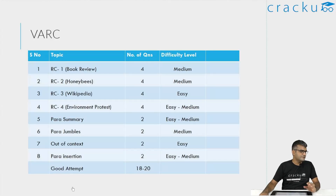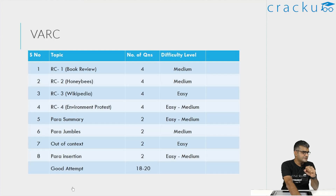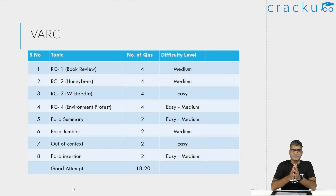If you are looking at the RCs, the first RC was about 1984, George Orwell's. The second one was about honeybees — this was a science and technology kind of thing, maybe involving biology. The third was about the editors of Wikipedia. The fourth one involved climate activism. I felt all four RCs were not very difficult to read; they were interesting. There was no dry RC.